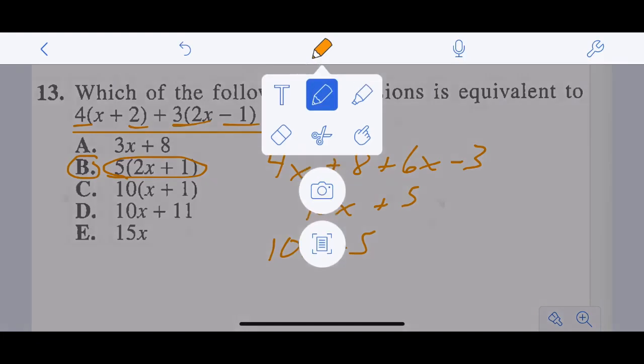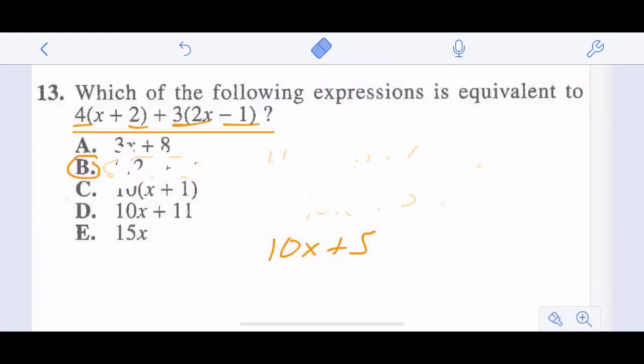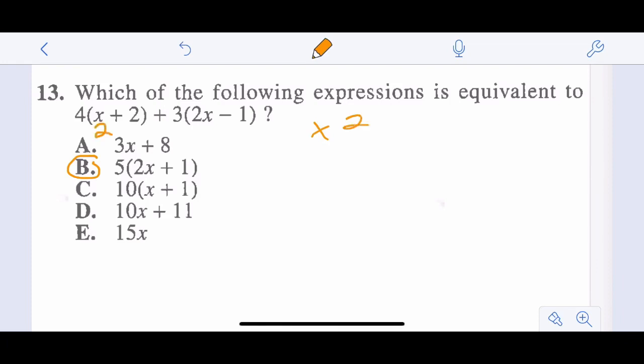Now if you'd really gotten stuck on this one, you could have also plugged in x equals 2 to see what would happen. If you plugged in x equals 2, you'd have 2 plus 2 is 4, 4 times 4 is 16. 2 times 2 is 4, minus 1 is 3. So 3 times 3 is 9. So it would be 25. 16 plus 9 is 25. And if you plug 2 into each of these again, we get 2 times 2 here is 4 plus 1 is 5. 5 times 5 equals 25.